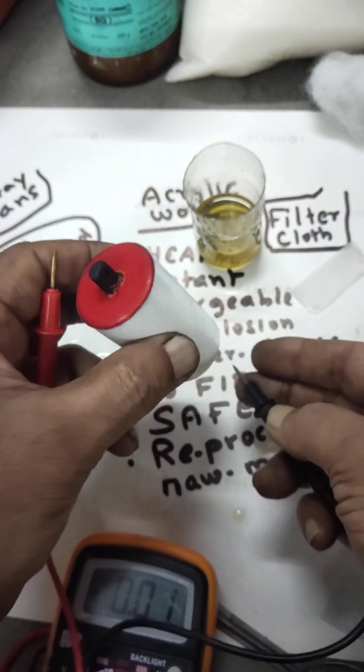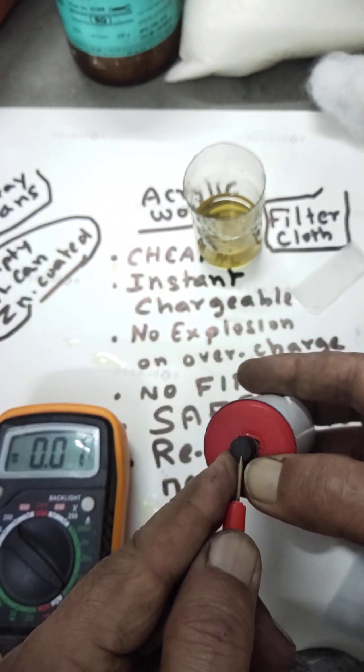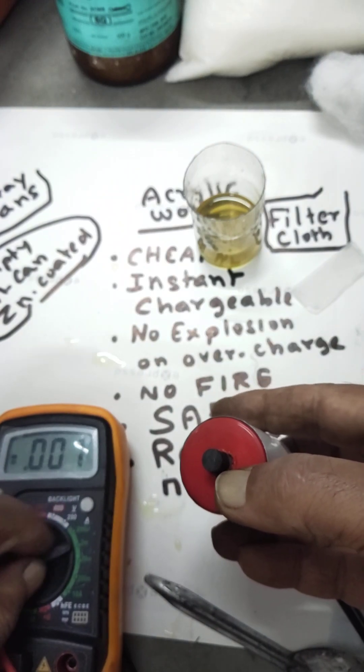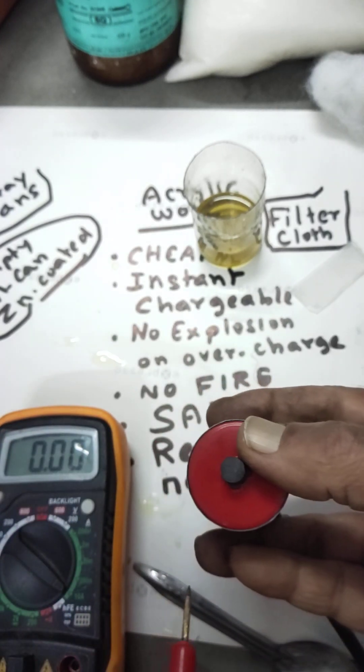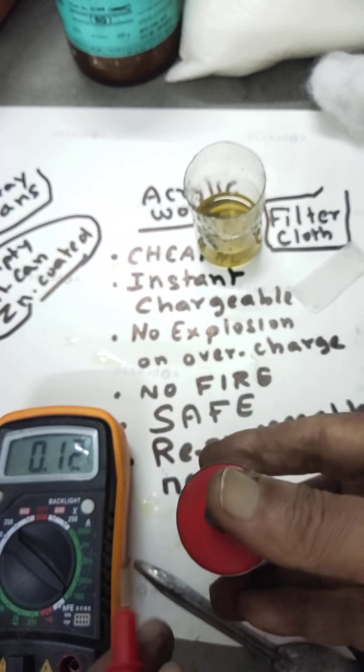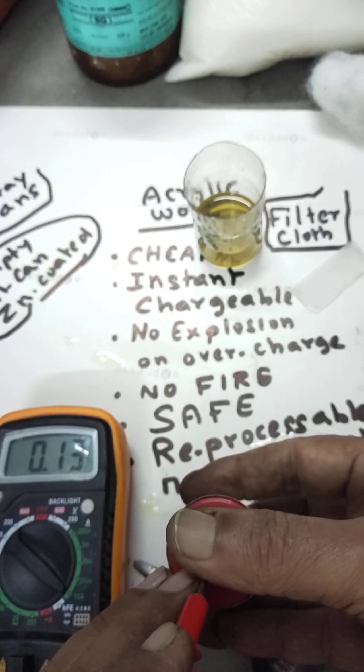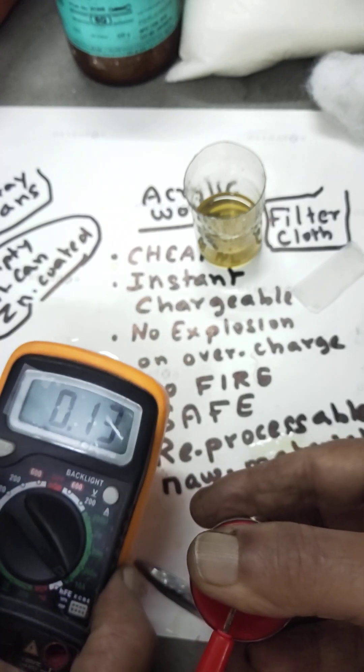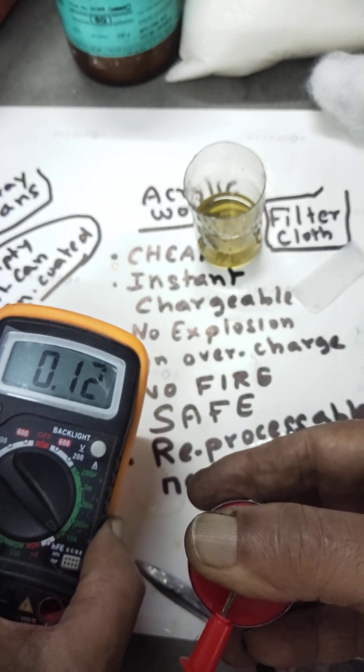Then we'll also see the current it's discharging. These batteries are more of a battery and also capacitors. It's not at saturation at present, showing only 130 milliamperes. Once it gets saturated it will show nearly 400 milliamperes.